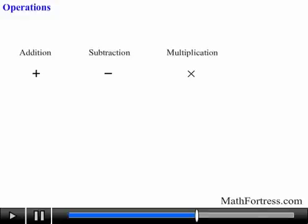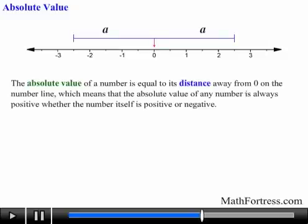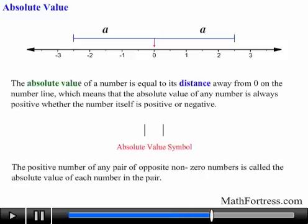Now that we know what integers are, let's discuss the different types of operations that can be used with integers. The four basic operations that can be applied to integers are addition, subtraction, multiplication, and division. Before we talk about these operators, let's talk about the absolute value of a number. The absolute value of a number is equal to its distance away from 0 on the number line, which means that the absolute value of any number is always positive whether the number itself is positive or negative. The symbol for absolute value is a set of double lines. In essence, the positive number of any pair of opposite non-zero numbers is called the absolute value of each number in the pair.